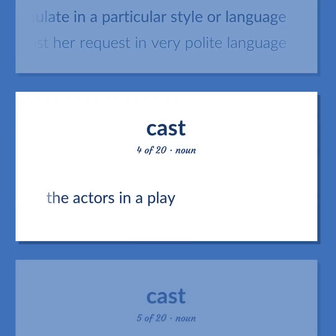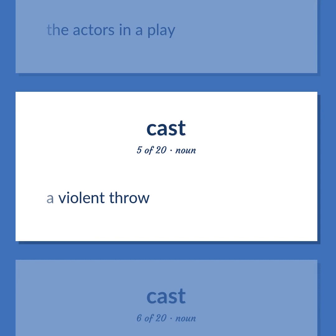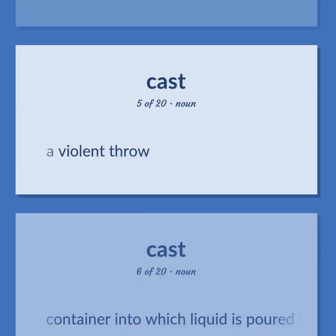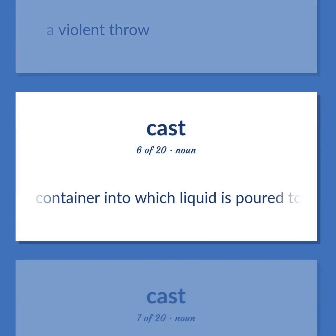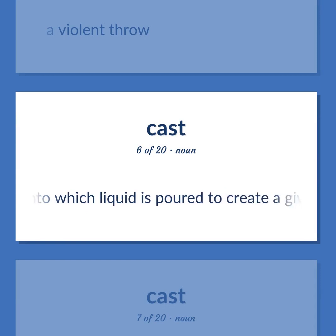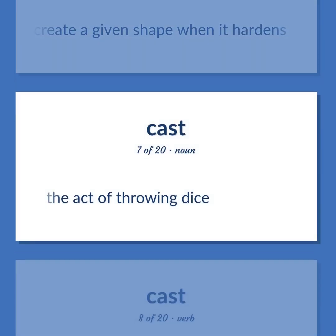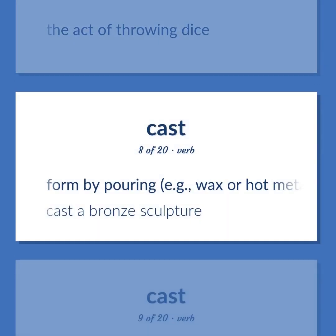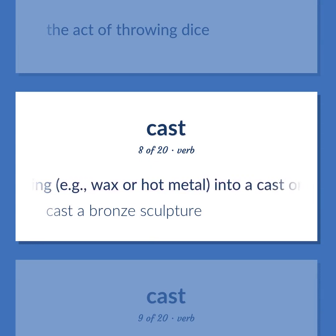Cast: The actors in a play. A violent throw. Container into which liquid is poured to create a given shape when it hardens. The act of throwing dice. Form by pouring, e.g., wax or hot metal, into a cast or mold — cast a bronze sculpture.